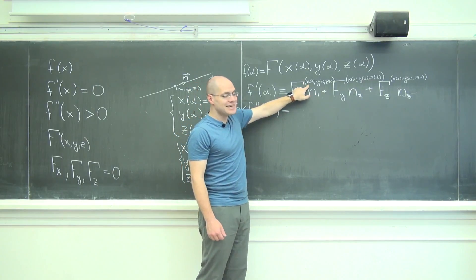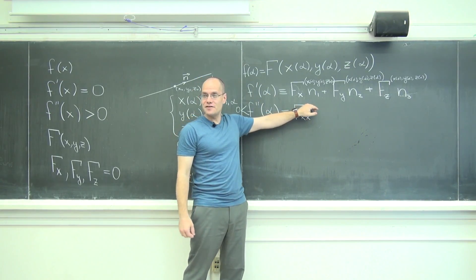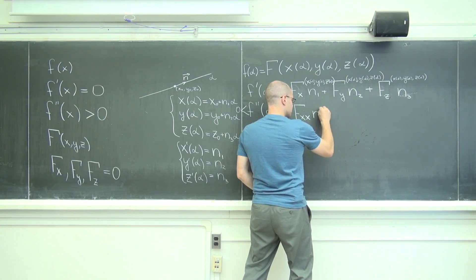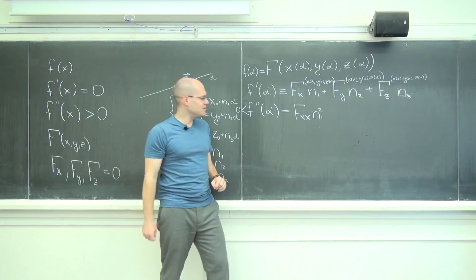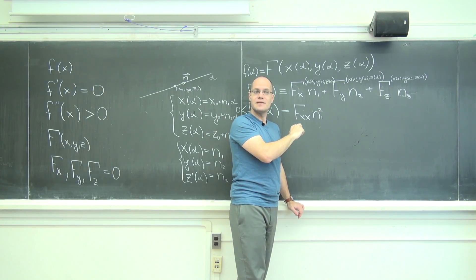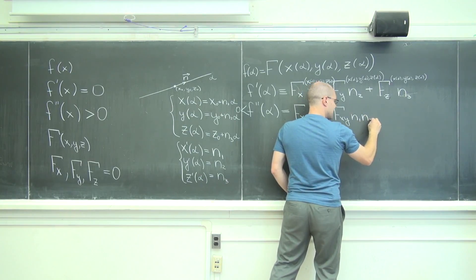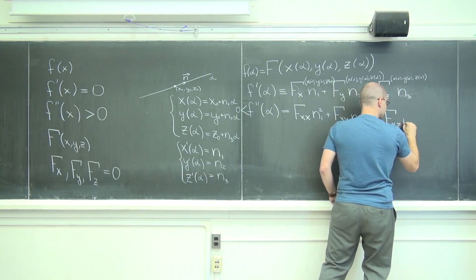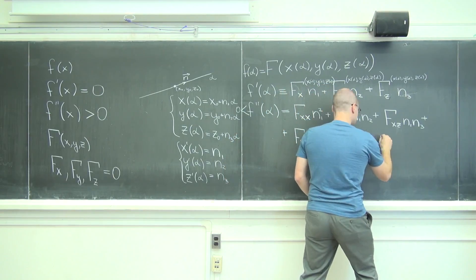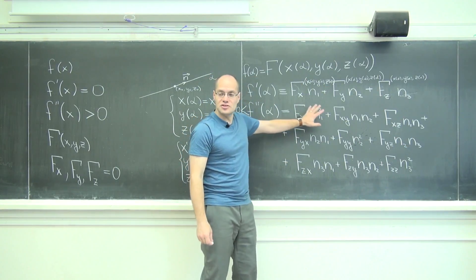Okay, so let's get going with the chain rule. It will be d this dx dx d alpha. So it'll be the second derivative of f with respect to x, dx d alpha, which is what? n1. So it's n1 squared. Should I write n1 squared? Sure. I'm tempted to write n1 n1, but n1 squared. Plus the derivative of this with respect to y, dy d alpha. What is dy d alpha? n2. And so this will be plus f sub xy n1 n2.